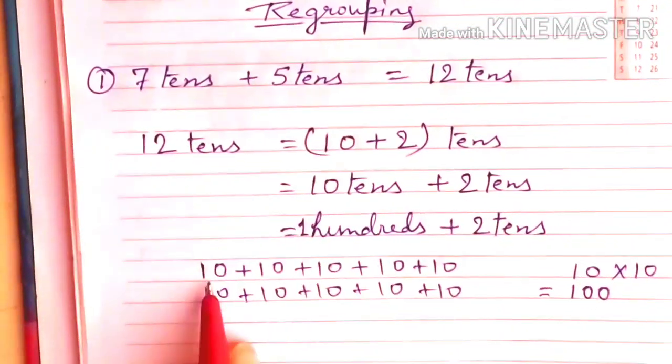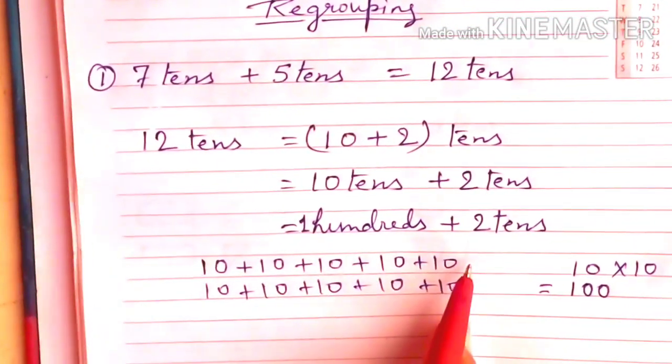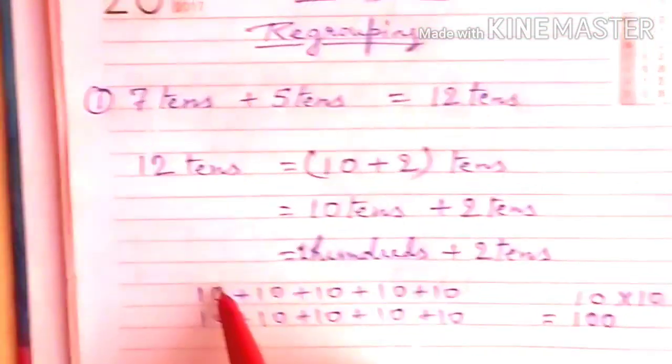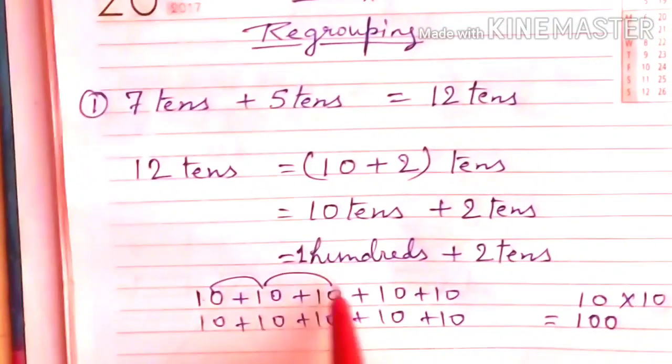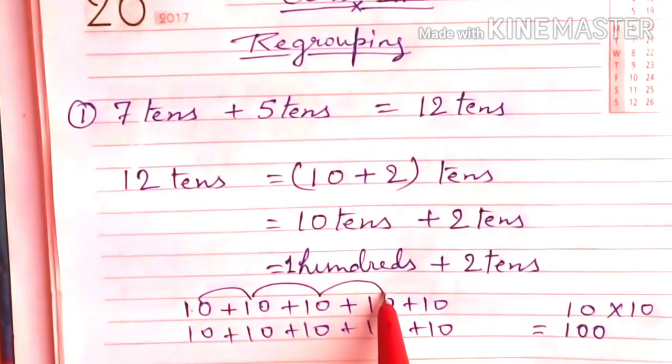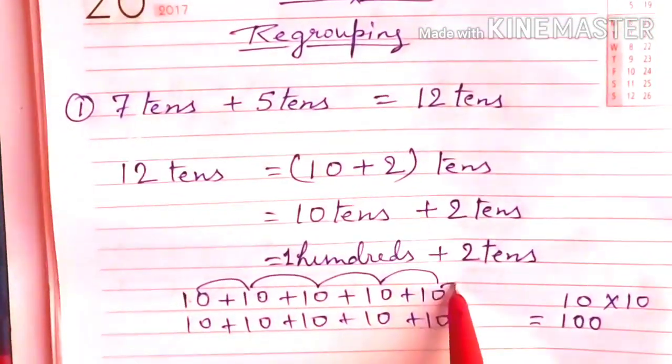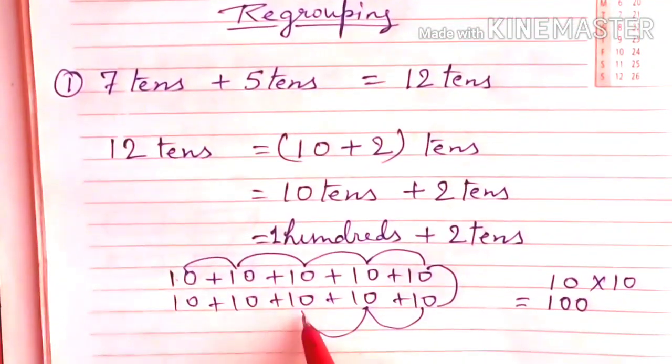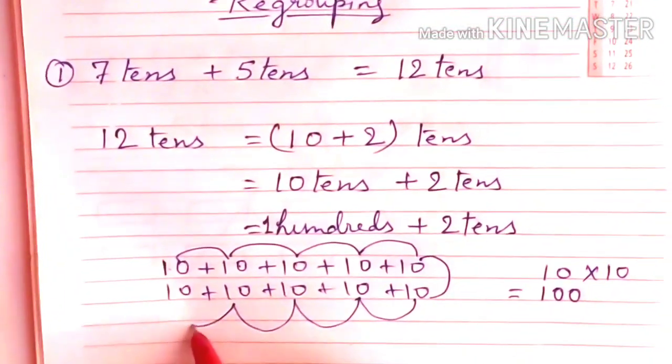10 tens means we have 10 ten times. So we add them: 10 plus 10 is 20, 20 plus 10 is 30, 30 plus 10 is 40, 40 plus 10 is 50, 50 plus 10 is 60, then 70, 80, 90, 100.